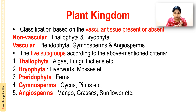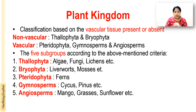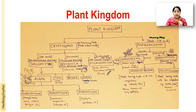I have drawn a chart showing the classification. The plant kingdom is divided into cryptogams and phanerogams. Cryptogams are the non-flowering plants without seeds. Phanerogams are the plants with seeds. Cryptogams are classified into thallophytes, bryophytes, and pteridophytes.